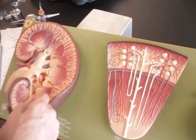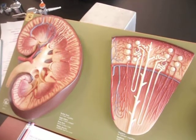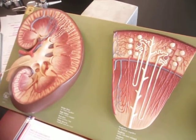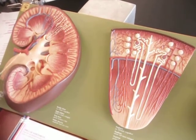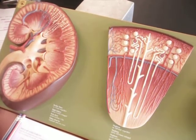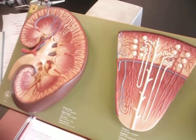The major calyces come together and form the large collecting area called the renal pelvis, and that is continuous with the ureter, which carries urine from the kidneys to the urinary bladder.